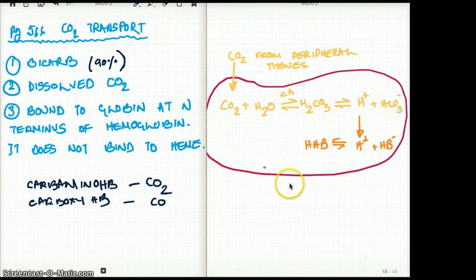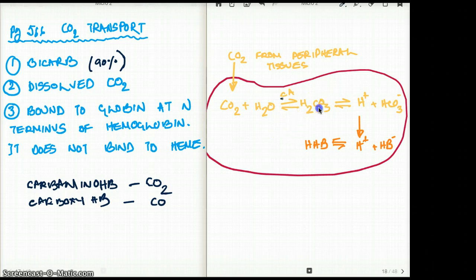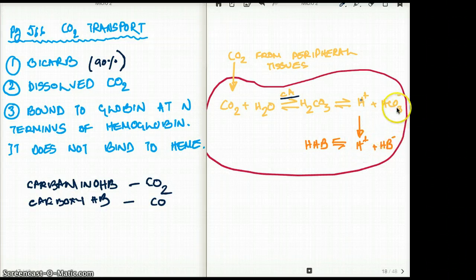Let's start with carbon dioxide in the plasma — that's in the peripheral tissues. Carbon dioxide enters the RBC. It binds with water using the enzyme carbonic anhydrase and forms H2CO3, or carbonic acid. Carbonic acid then dissociates to form hydrogen and bicarb.